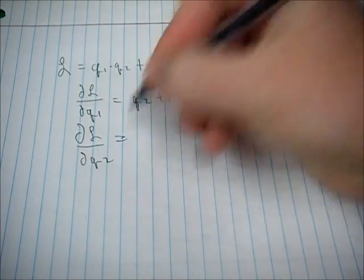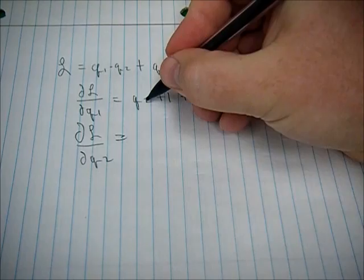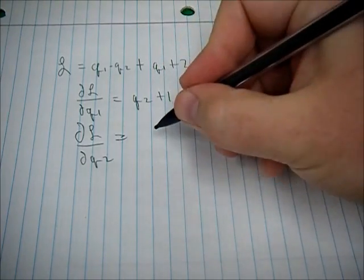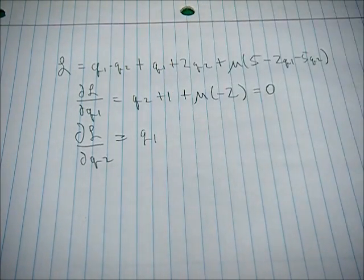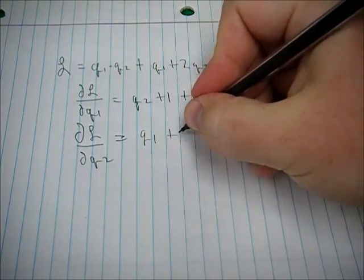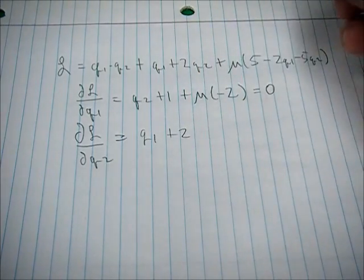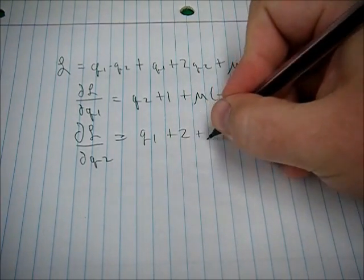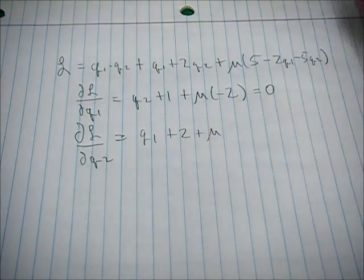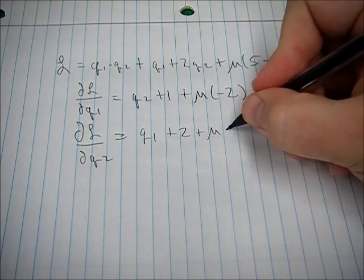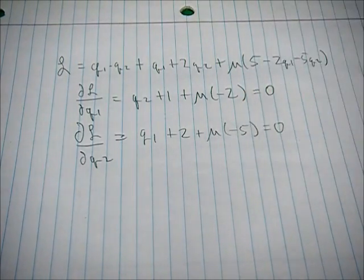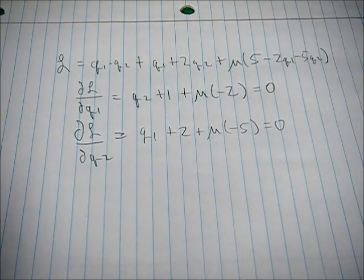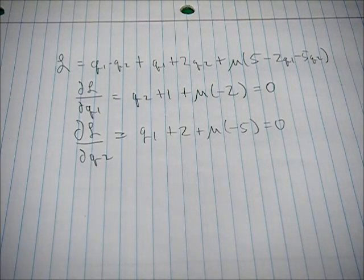The second first order condition is with respect to q2. From the interactive term we get q1, plus two from the linear term, plus mu times negative five from the constraint component, and that equals zero.